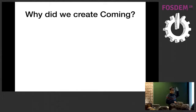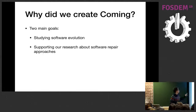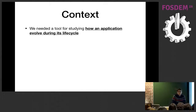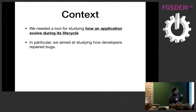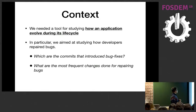Why did we create Coming? We had two goals. The first was to study software evolution, and the second was to support our research about automatic software repair. To study software evolution, we wanted to know how an application evolved during its lifecycle — in particular, how developers repair bugs, for instance the probability of changes introduced by fixes.